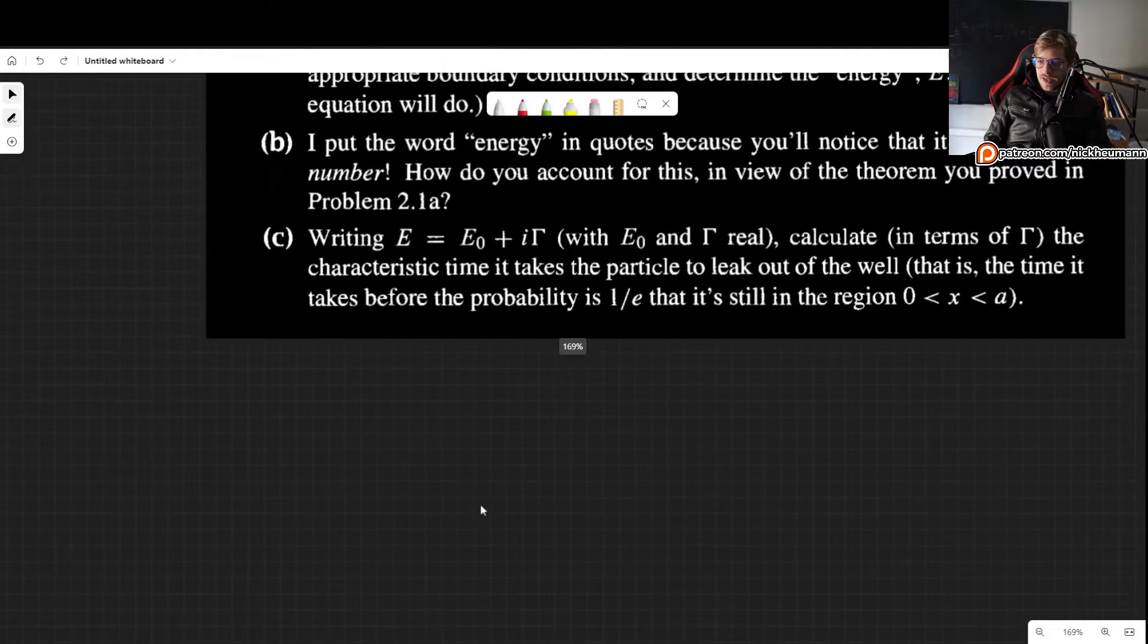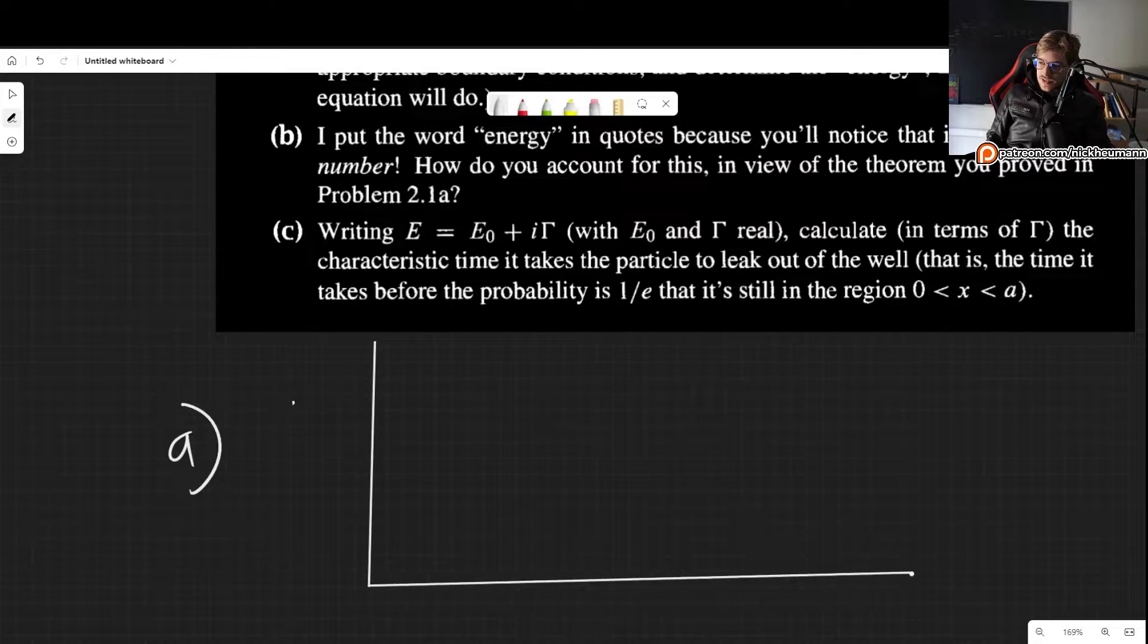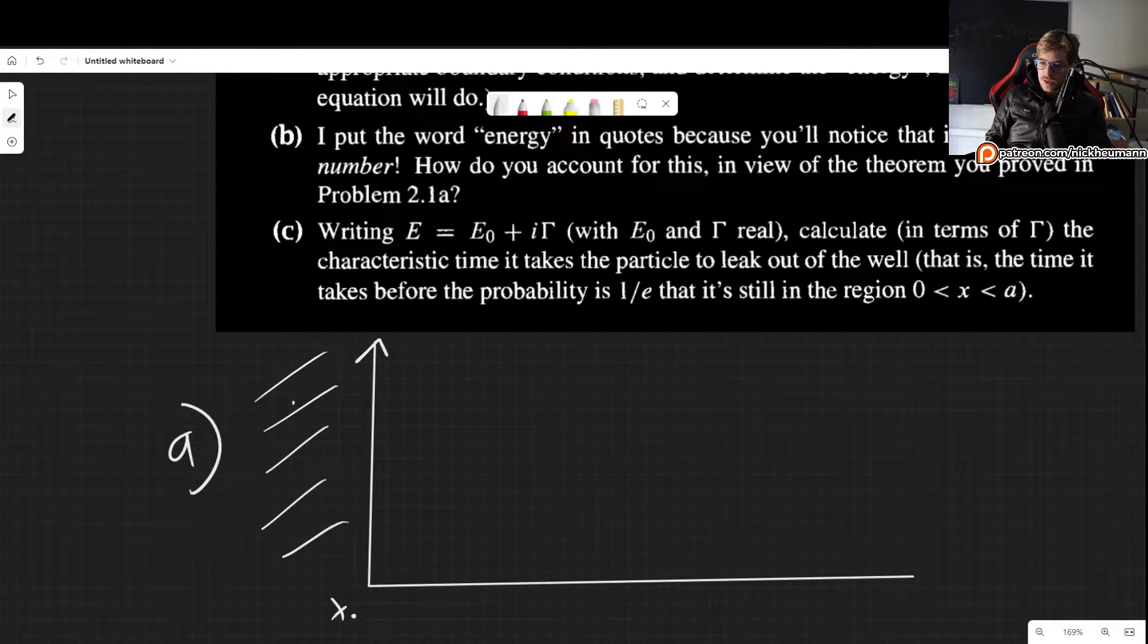So that is what we have to do. So part a, we now need to find the wave function, basically. Now, our problem is if this is the potential, right? We have an infinite potential right here before, in x smaller than 0, so if this is 0.